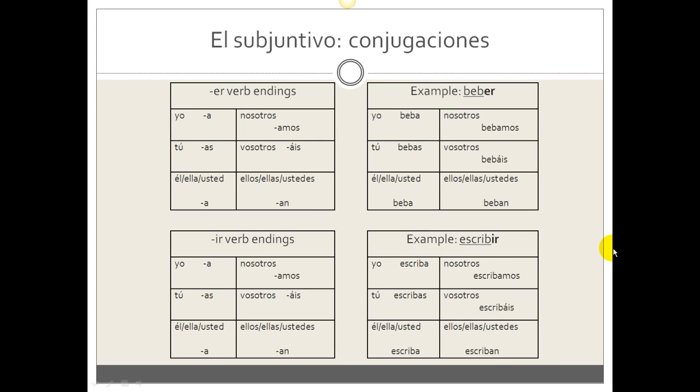Now let's look at ER and IR verbs. ER and IR verbs are identical. They're both going to take the endings a, as, a, amos, áis, an. And notice, I forgot to mention this with the AR verbs, but in every verb, the yo and the él, ella, usted conjugations are going to be identical.